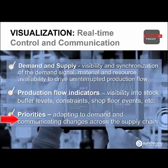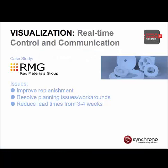Finally, priorities. Modern demand-driven manufacturing technologies are highly adapted to changes in demand, and subsequent shifts in priorities need to be communicated across the supply chain in real-time to maintain optimal flow. For example, schedulers need visibility into available resources to offload work; operators need visibility into what to work on next; suppliers need visibility into replenishment adjustments; and service providers need visibility to optimize transportation.